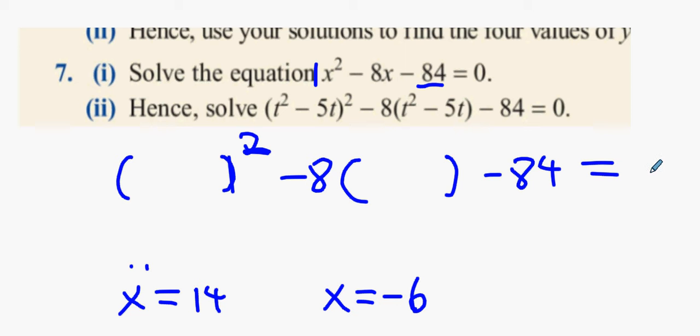So imagine that there's no x, just a blank area. This blank area can be filled with anything you want. So this means that the blank spot will equal 14 and the other blank spot will equal minus 6.